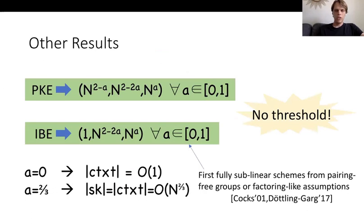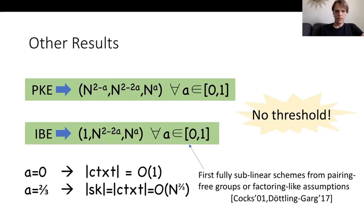Our last set of results are generic. First, we show how to essentially remove the threshold limitation from the Boneh-Naor scheme, getting a scheme from general public key encryption with constant-size ciphertext and no threshold limitation. Using identity-based encryption, we can then shrink the public key size. Interestingly, we can trade off between the secret key and ciphertext size and achieve both being n^(2/3). This gives us the first fully sublinear scheme from general IBE, which can then be instantiated from pairing-free groups or factoring-like assumptions.